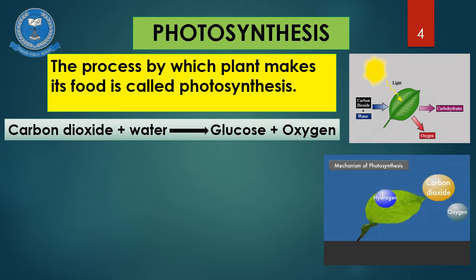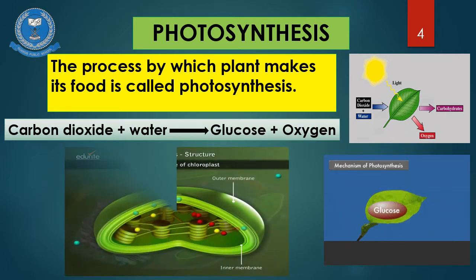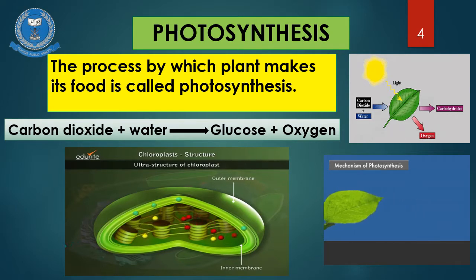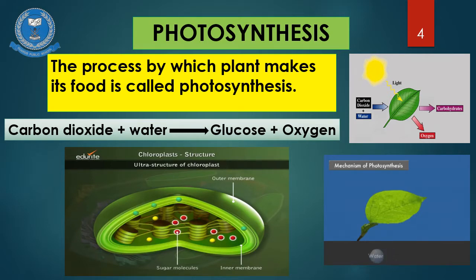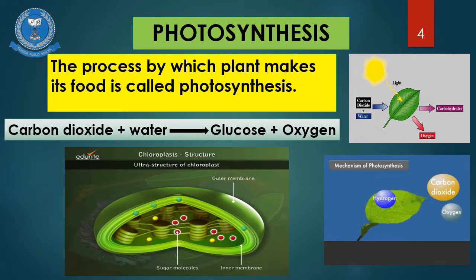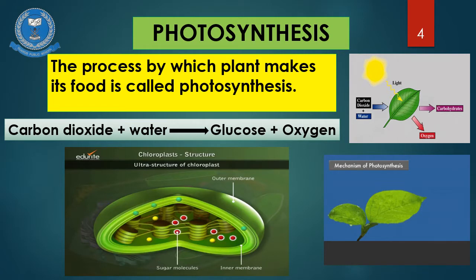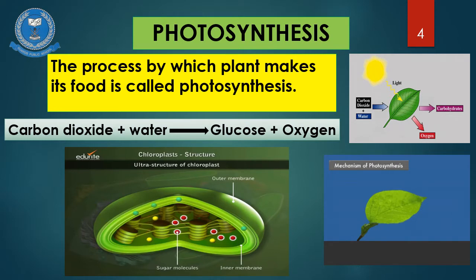Photosynthesis occurs inside the chloroplast. Chloroplasts are the tiny disc-shaped organelles which are present in the leaves of the plant. They are green in color because they contain a green colored pigment which is called chlorophyll. For photosynthesis to take place, the chloroplasts need to collect the three vital ingredients, and these are carbon dioxide, water and sunlight. Carbon dioxide gas enters through the pores which are called stomata. These stomata are located on the underside of the leaf.